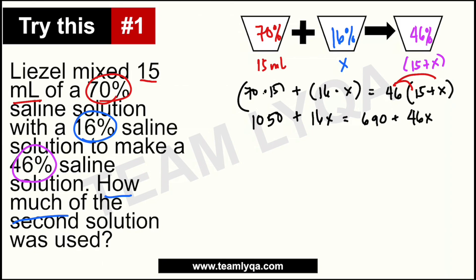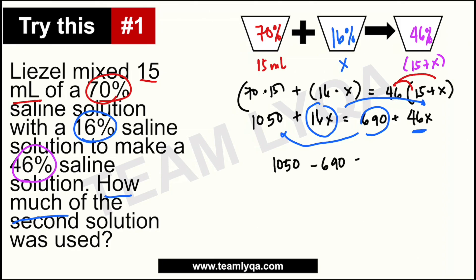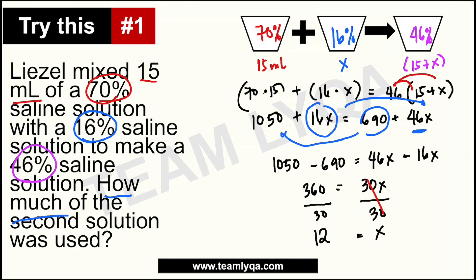Tapos i-solve lang natin down para mahanap natin yung ibig sabihin ng x. Dahil dito naman sa side na ito yung mas malaking x, ito ang lilipat natin doon — ito naman ang ilipat natin doon sa kabila. So magiging: 1,050 minus 690 is equal to 46x minus 16x. So, 1,050 minus 690 will give us 360, equal siya sa 46x minus 16x, which will give us 30x. So, 360 divided by 30 gives us 12. So, x is equal to 12 — ang sagot natin would be 12 ml.